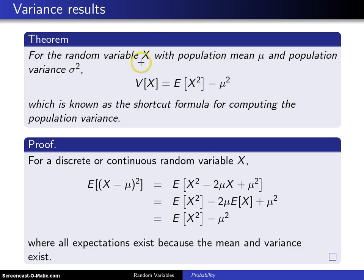For a random variable X, and X might be continuous or X might be discrete, with population mean μ and population variance σ²,